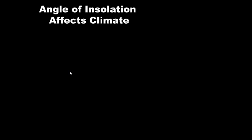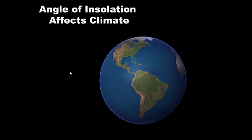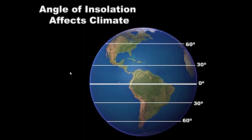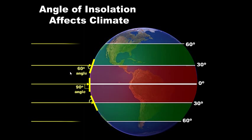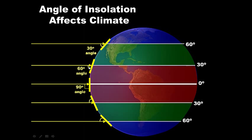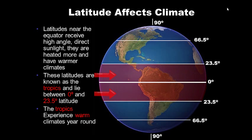Let's look at our Earth with latitude lines. The sun strikes the Earth at high-degree angles near the equator, and as you move farther away, the angle changes from 60 to 30 degrees. This angle of insolation is why we have cold poles and a warmer equator. Latitudes near the equator receive high-angle direct sunlight, are heated more, and have warmer climates year-round. These are known as the tropics, lying roughly between 0 and 23.5 degrees latitude.